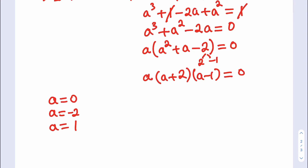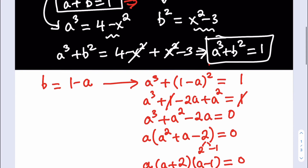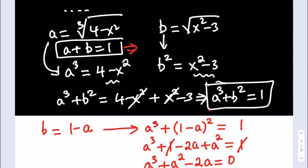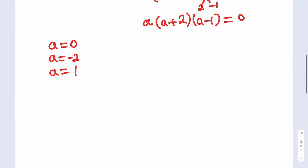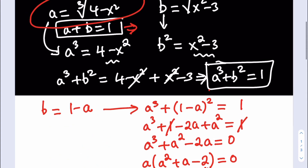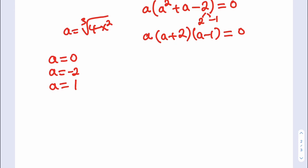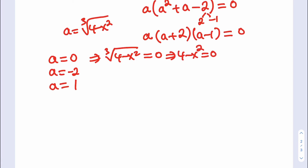Our goal was not to solve for a — it's a dummy variable. We back-substitute: a equals the cube root of 4 minus x squared. For a equals 0: the cube root of 4 minus x squared equals 0, so 4 minus x squared equals 0, giving x squared equals 4, so x equals 2 or x equals negative 2. For a equals negative 2: the cube root of 4 minus x squared equals negative 2, so cubing both sides gives 4 minus x squared equals negative 8, meaning x squared equals 12, so x equals 2 root 3 or negative 2 root 3.